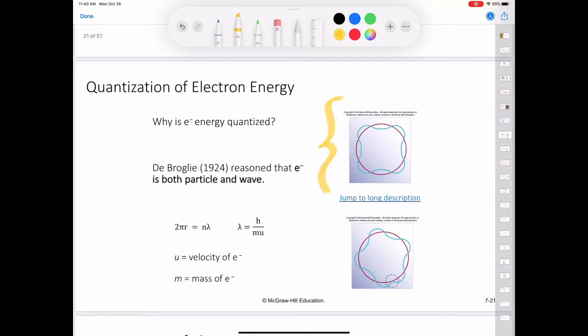In this figure, we see how the circumference of the orbit is equal to an integral number of wavelengths. This is an allowed orbit. Here, the circumference of the orbit is not equal to an integral number of wavelengths. As a result, the electron wave does not close in on itself. This is a non-allowed orbit.